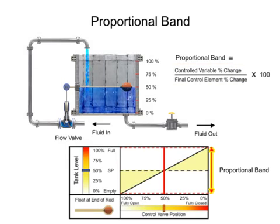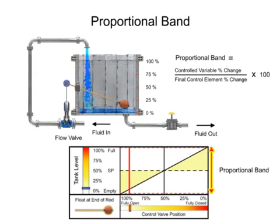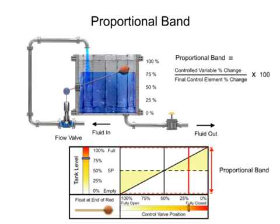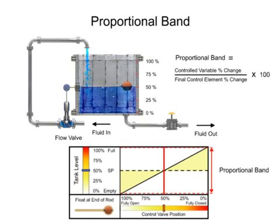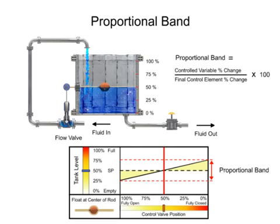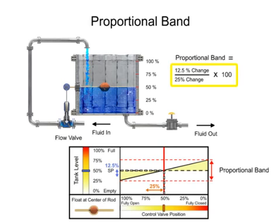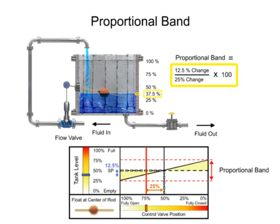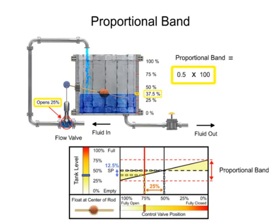The width of proportional band determines how much of a controlled variable change is required to cause the final control element to move by a determined amount. By placing the float on the end of the rod, the fluid level has to change 100% to cause the final control element to change 100%. By placing the float at the center of the rod, the fluid level has to change 12.5% to cause the final control element to change 25%. The width of the proportional band is reduced by half.